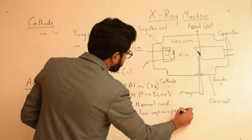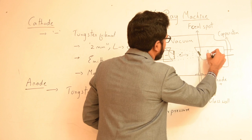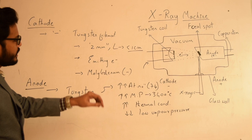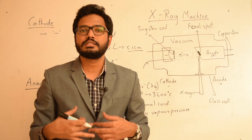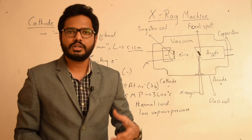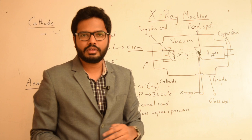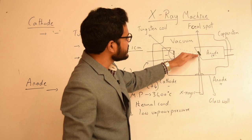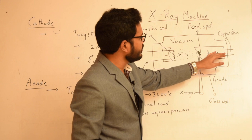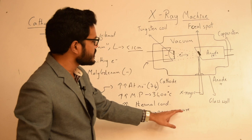The anode material is chosen as tungsten because its high atomic number makes the rate of formation of x-ray photons much more efficient. Its very high melting point prevents the anode from melting due to high-speed electrons impinging on it. Its high thermal conductivity allows heat to be efficiently transmitted towards the copper stem attached behind the anode, and its low vapor pressure helps maintain the vacuum within the glass enclosure.